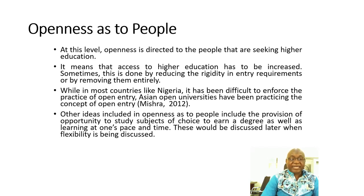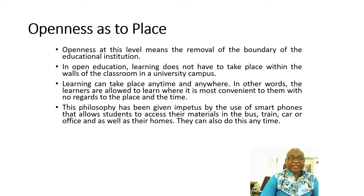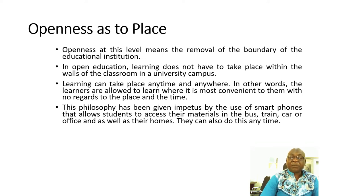When we talk about openness as to people, we mean that education should be open to people who are traditionally excluded from having access to the educational system. Openness as to place is the removal of boundaries of educational institutions. In open education, learning does not have to take place within the walls of a classroom or on a university campus — learning takes place anywhere, anytime. The learners are allowed to learn where it is most convenient for them.